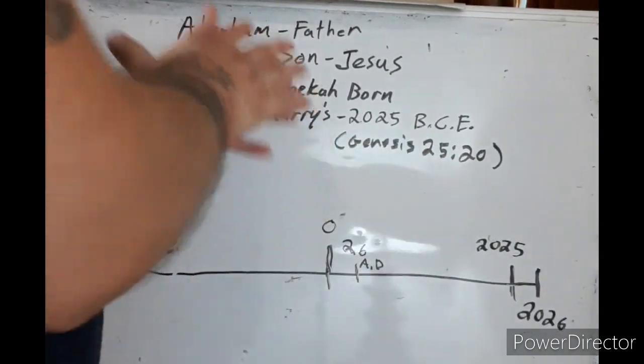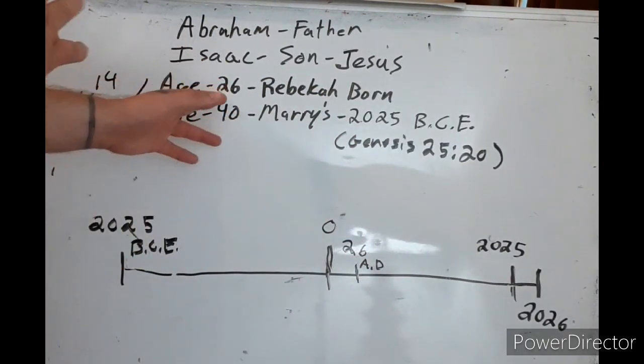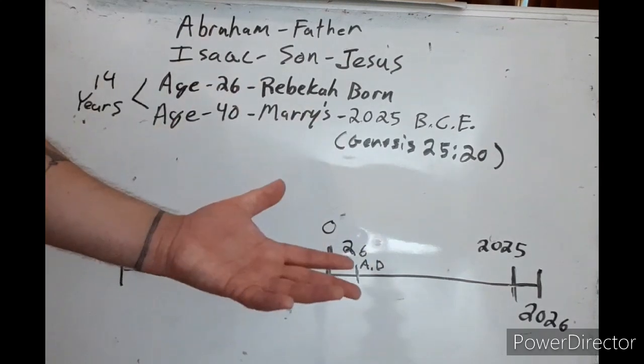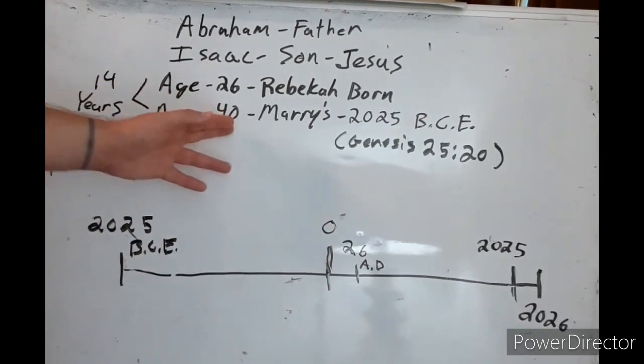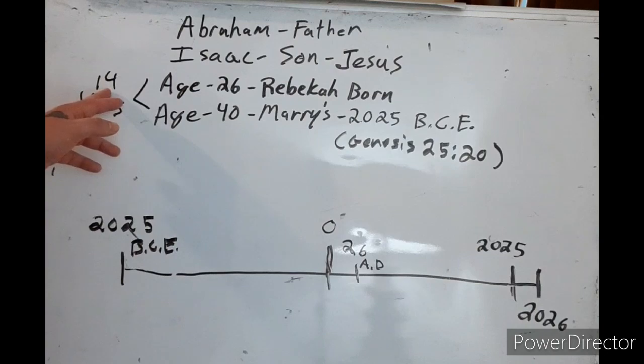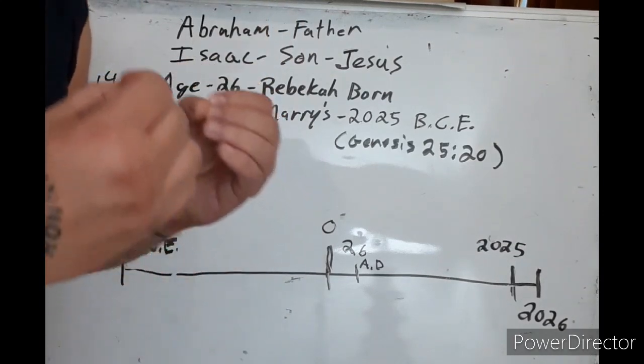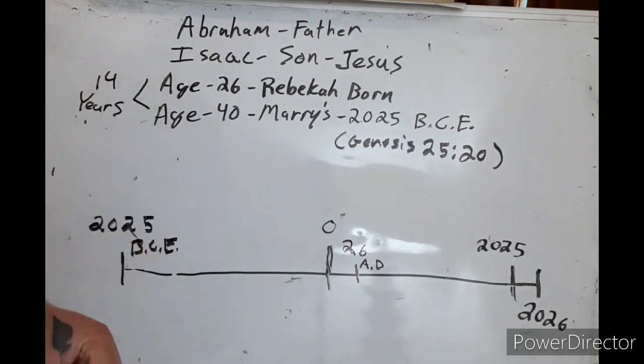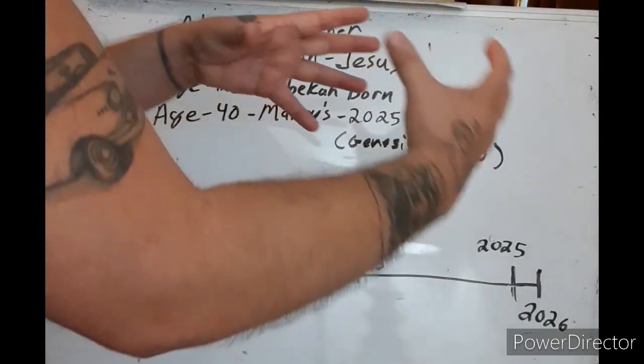So this is all how God declares the end from the beginning. Isaac's age and Rebecca's age, if you add them together, 66, and there's 66 books in the Bible. But you want to know something even crazier? If you add 66 plus the 14 years old that Rebecca was, it's 80. King James 1611 had 80 books, not 66, but they were taken out called the Apocrypha. And Psalms 90 verse 10 says that a generation is 70 years, but 80 if it's strong.